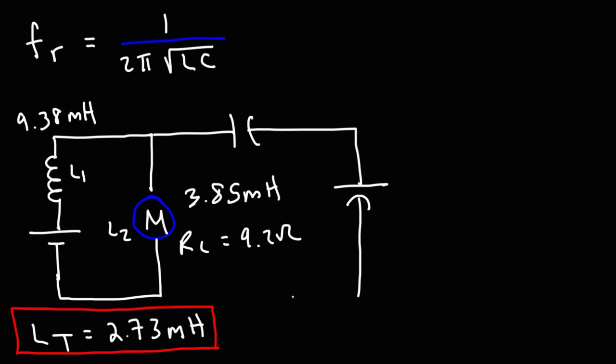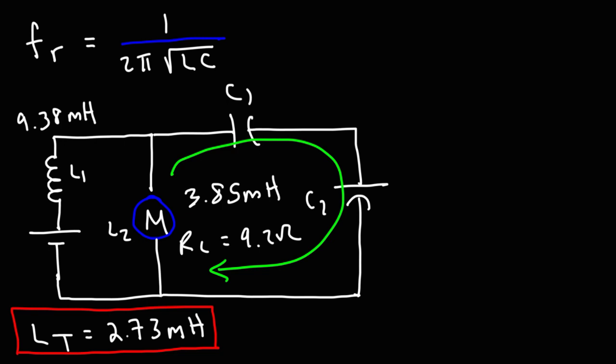Continuing the circuit, we have this part. Let's call this C1 and C2. With respect to the motor, C1 and C2 appear to be in series with each other. To calculate the capacitance of two capacitors in series, the formula is similar to two inductors that are parallel: C1 times C2 divided by C1 plus C2.